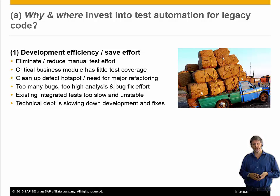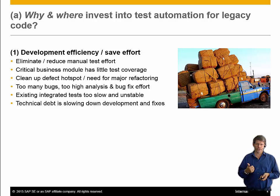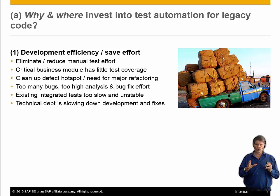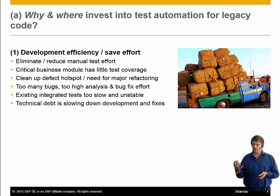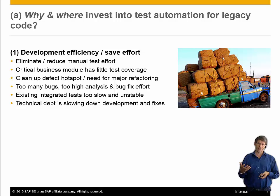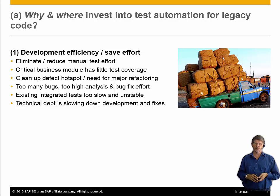Topics that should define where to invest in test automation for legacy code: first, reduce all manual test efforts — that is an immediate return. Another is a critical business module with little test coverage; if you get wrong numbers from a core module, you may not make money anymore, so it's a risk issue. Another could be a defect hotspot — a module that constantly gives trouble. If you plan major refactoring, you need tests to safeguard the existing behavior so you don't accidentally destroy it.